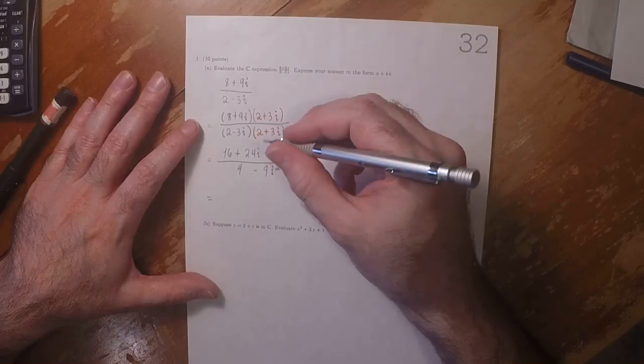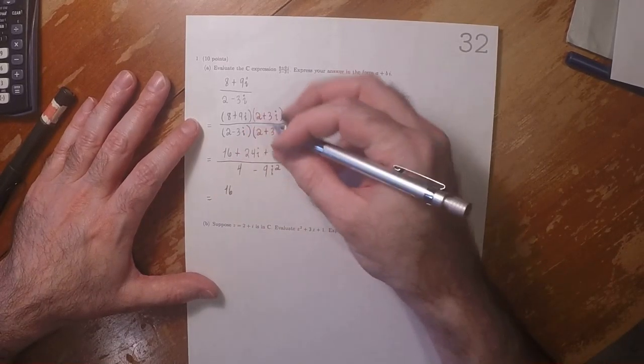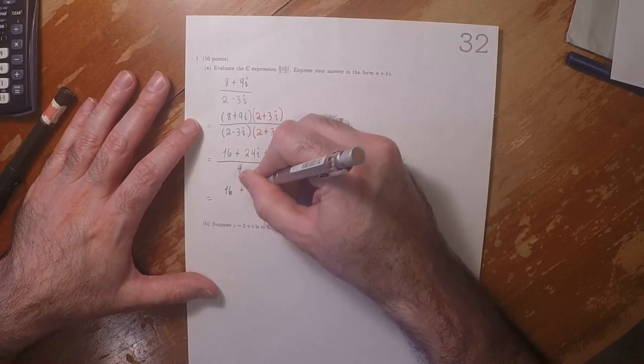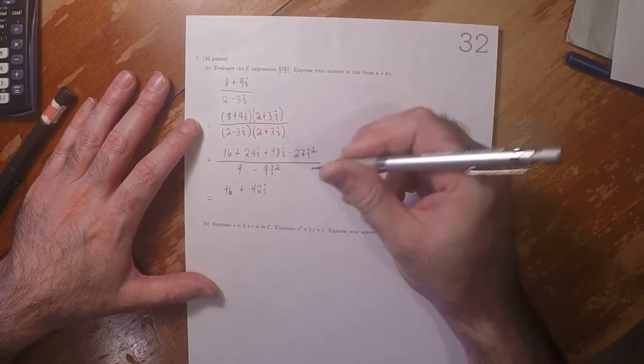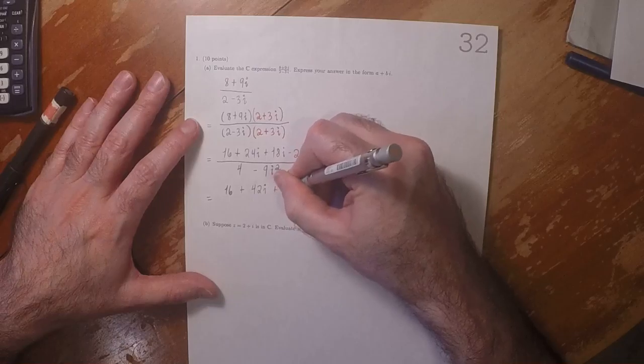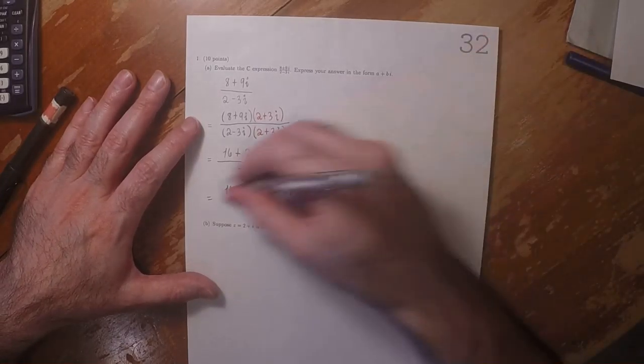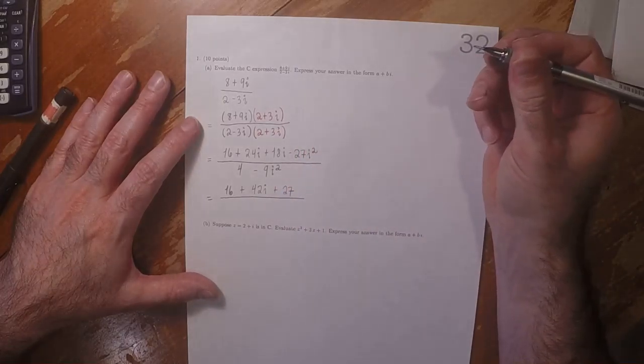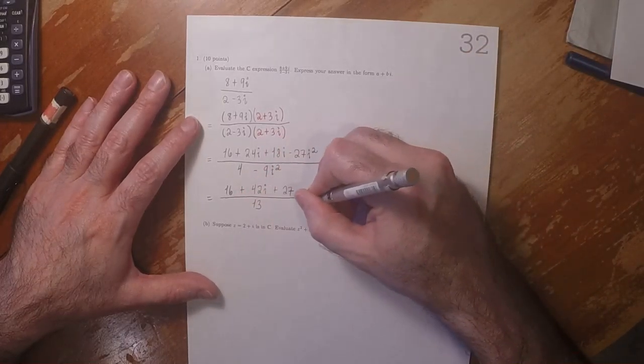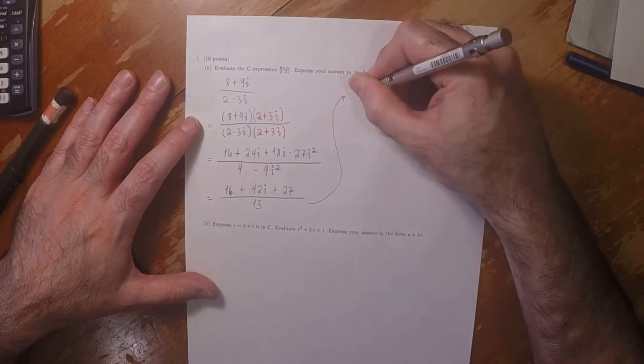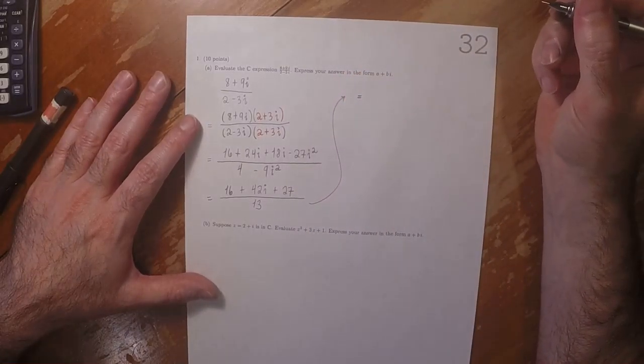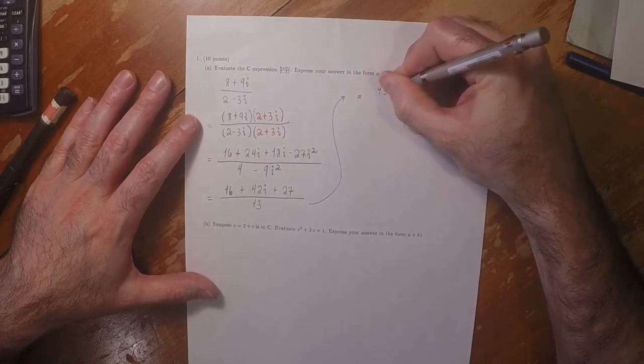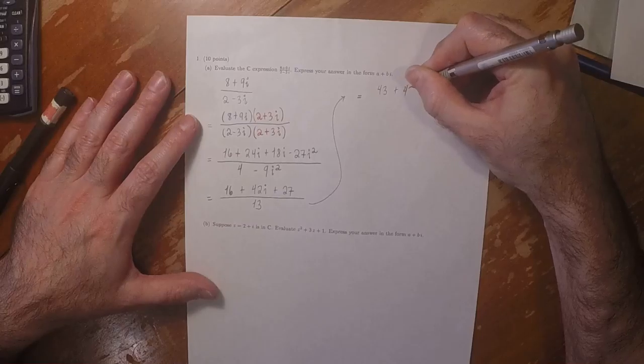Which is equal to 16 plus 42i plus 27, and then divide by 13, which is equal to 43 plus 42i divided by 13.